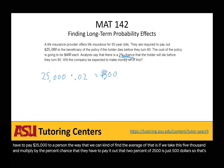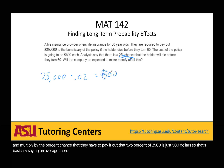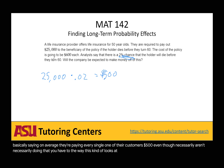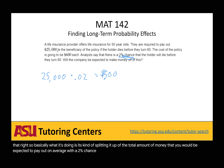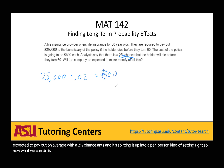So that's basically saying on average they're paying every single one of their customers $500. Even though they aren't necessarily doing that literally, the way this looks at it is: paying out that $25,000 with a 2% chance — it's splitting the total expected payout into a per-person amount. Now we can compare this $500 to how much they actually require as payment for the program.